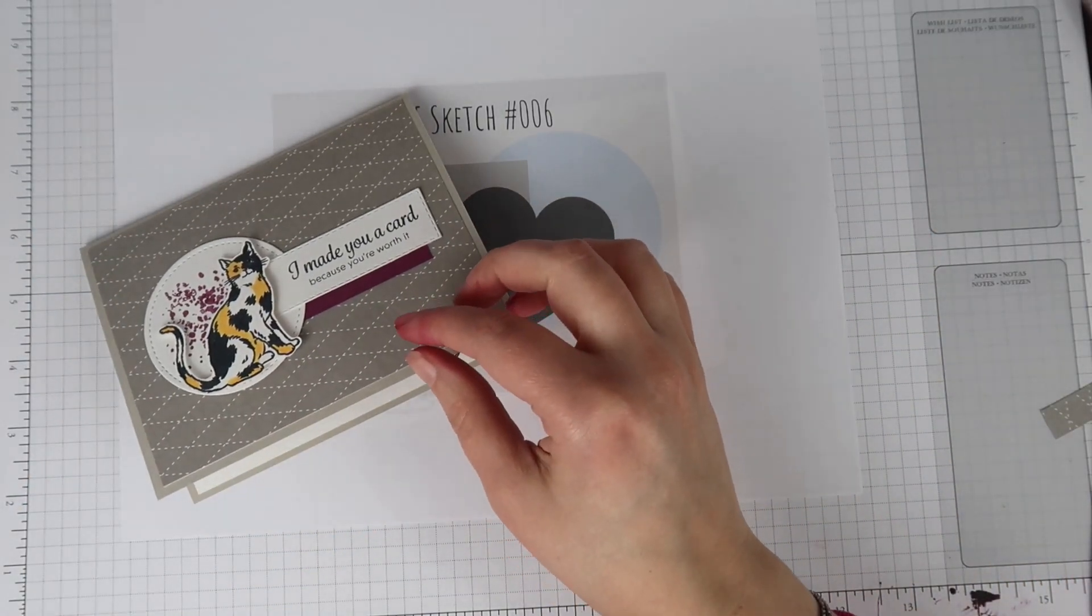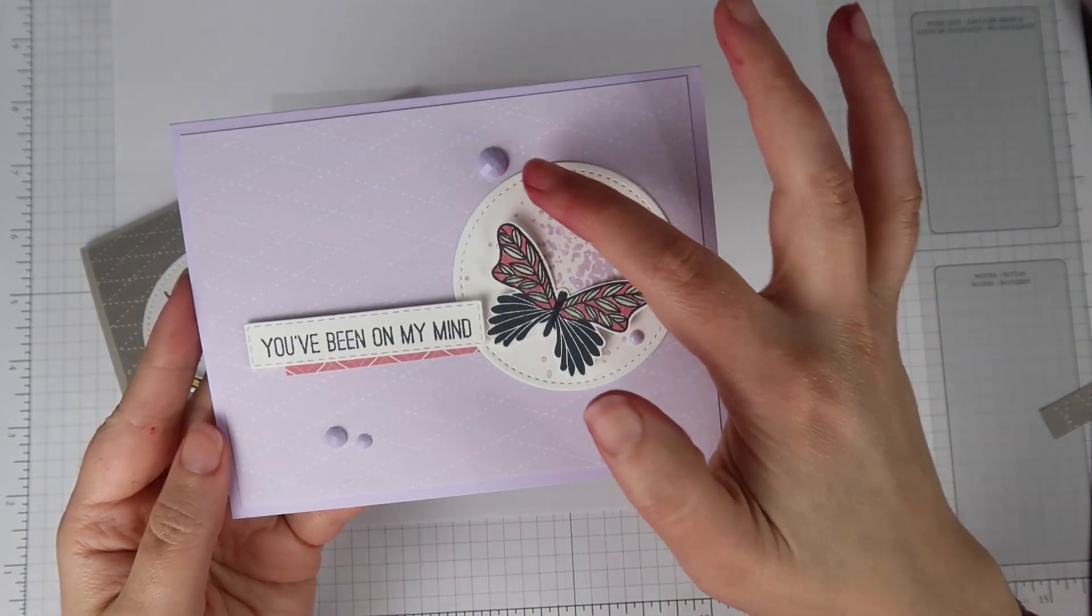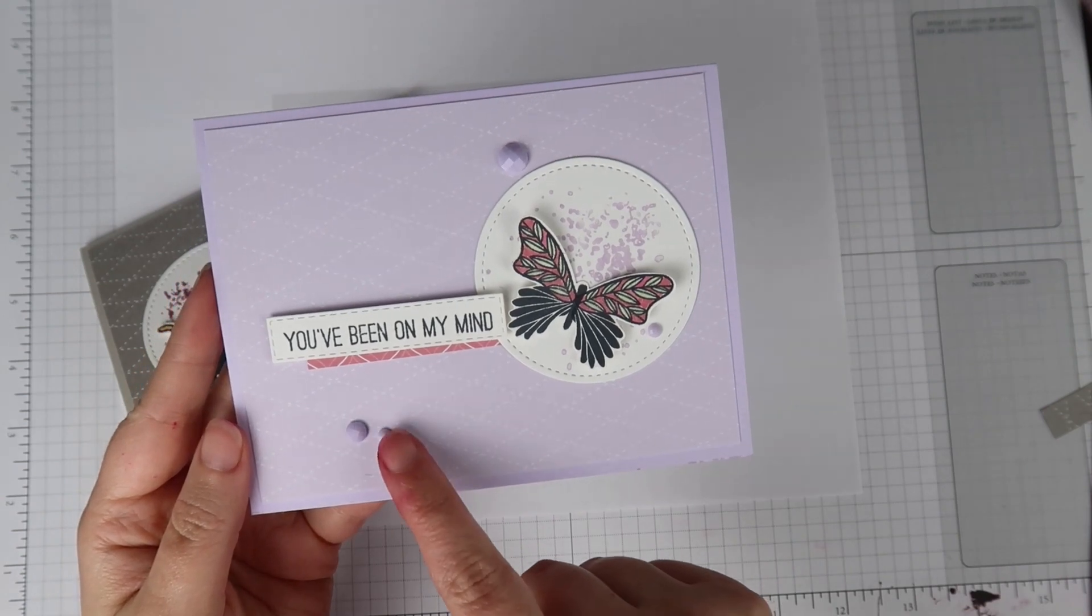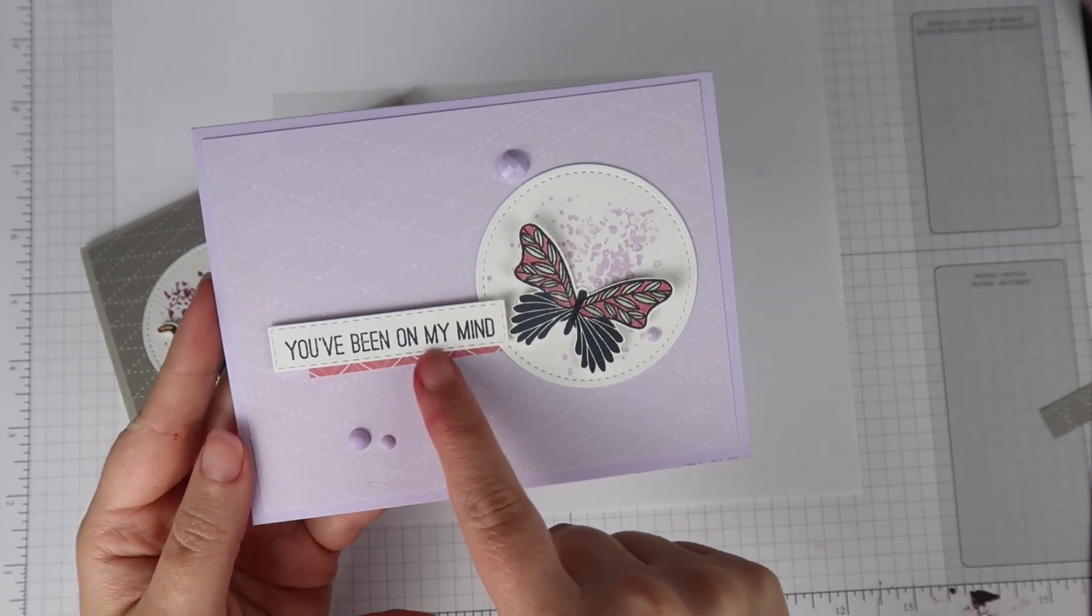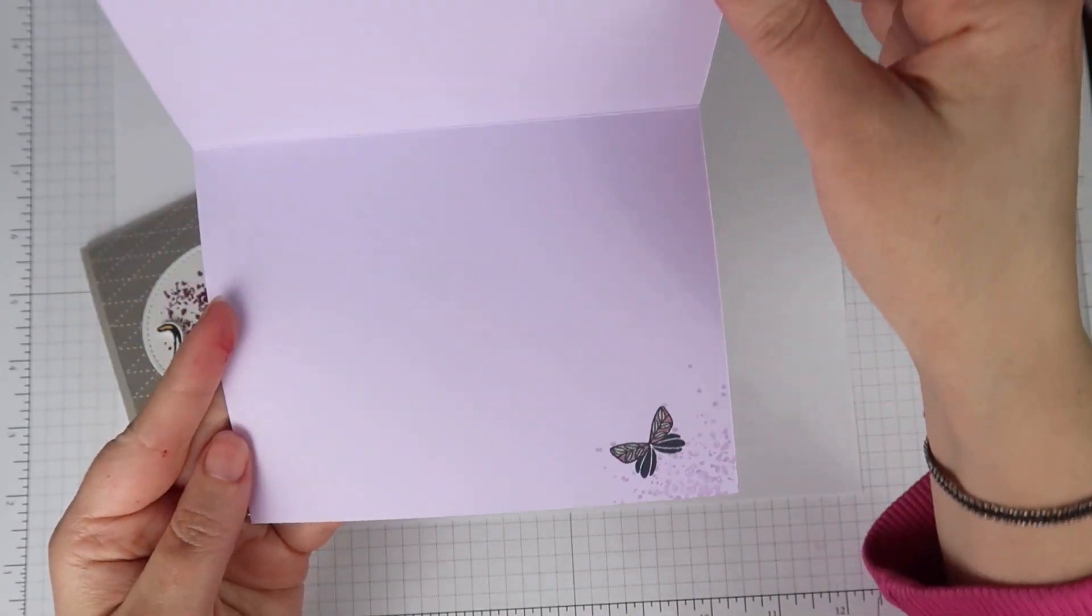I did make a few other cards using this sketch that are a little bit different. So I thought I would show you those. This one I did using a butterfly. I added a few extra embellishments and I used an even smaller circle on this one to help my butterfly pop.